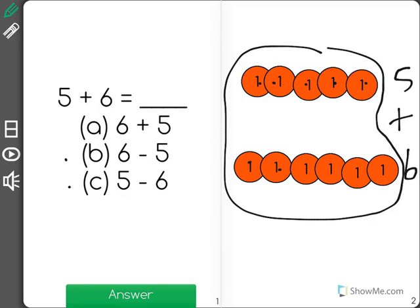1, 2, 3, 4, 5, 6, 7, 8, 9, 10, 11. 5 plus 6 equals 11, and it wants to know which other one of these equals 11.